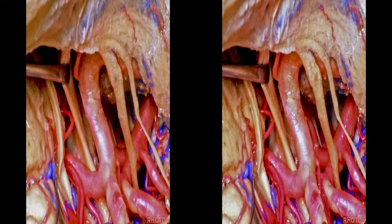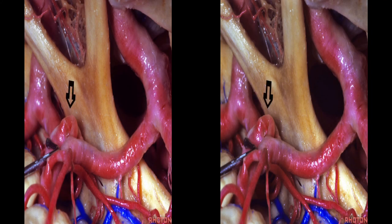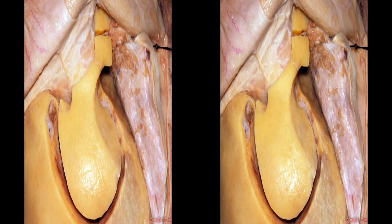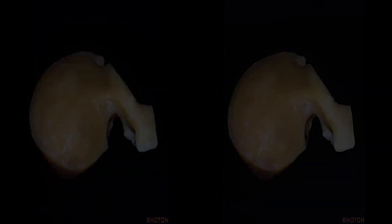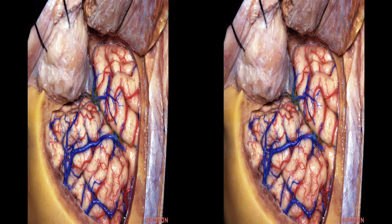For approaches to the anterior communicating area that don't require sub-temporal or transcavernous access, we don't need the zygomatic arch. We can do a modified orbitozygomatic approach, elevating only the roof and lateral wall of the orbit without the temporal area. This modified OZ approach gives us access to the orbit, along the sylvian fissure, the anterior fossa, the clinoid, and over to the anterior communicating area.